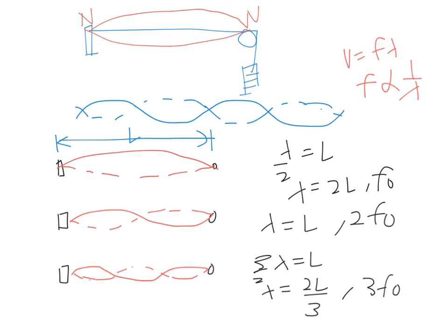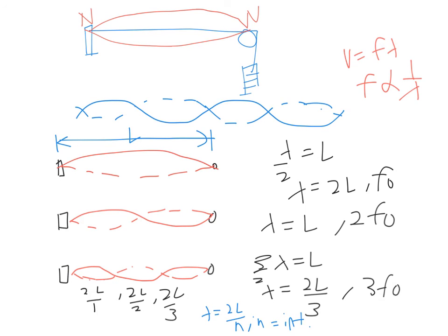The general formula, which is very useful, is lambda equals 2L over n, where n is an integer. This allows you to predict wavelength and frequency at any resonance mode for a stretched string.